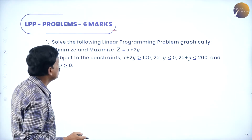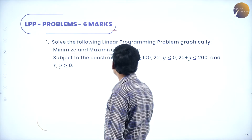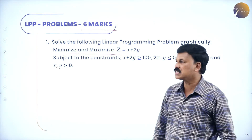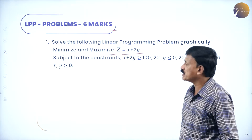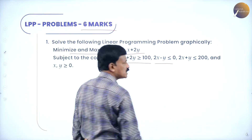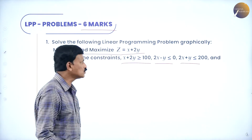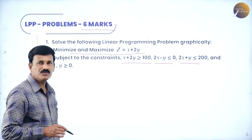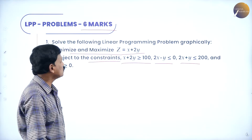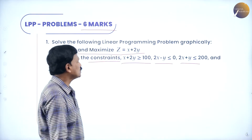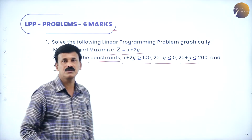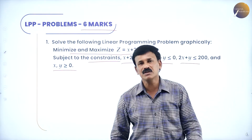Let us consider the first problem: solve the following linear programming problem graphically, minimize as well as maximize the objective function z = x + 2y. We have to find both the minimum and maximum values. The constraints are: x + 2y ≥ 100, 2x - y ≤ 0, and 2x + y ≤ 200. The non-negative restrictions are x ≥ 0 and y ≥ 0.